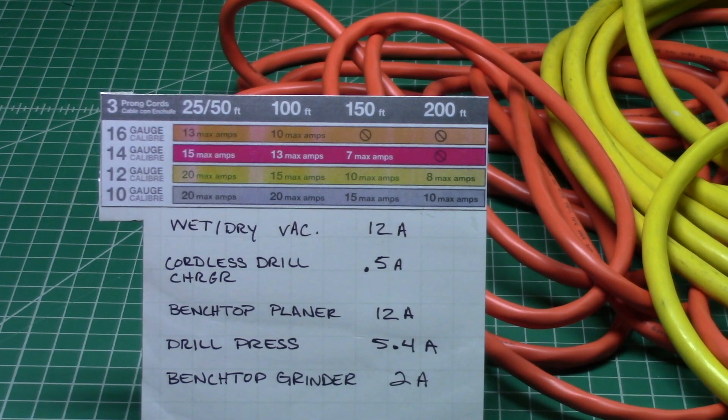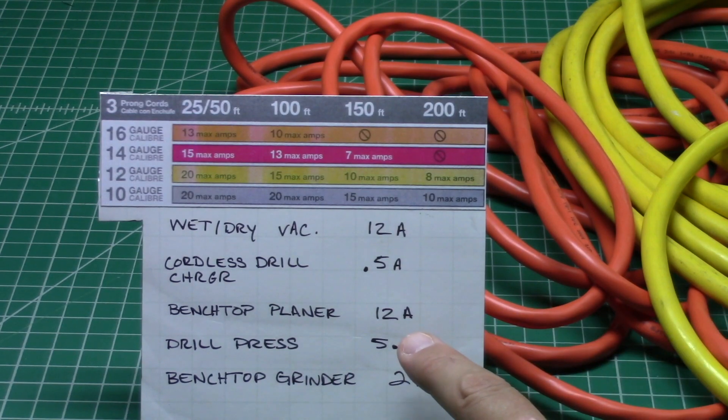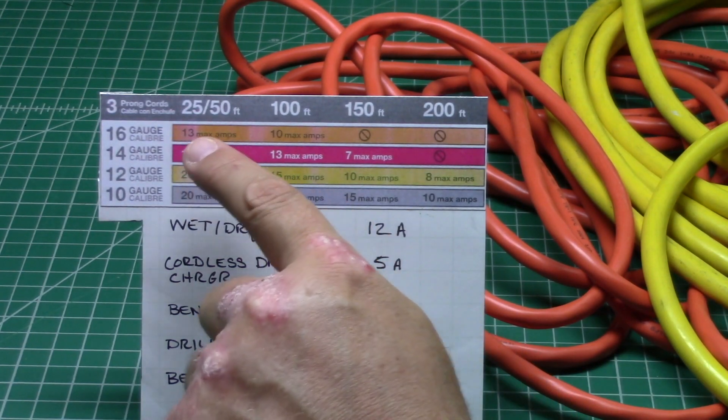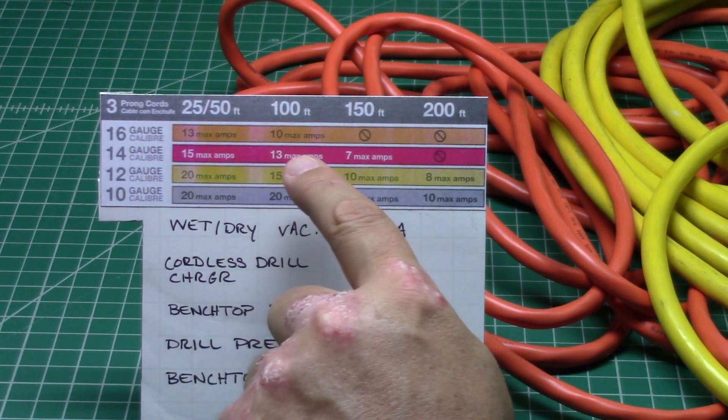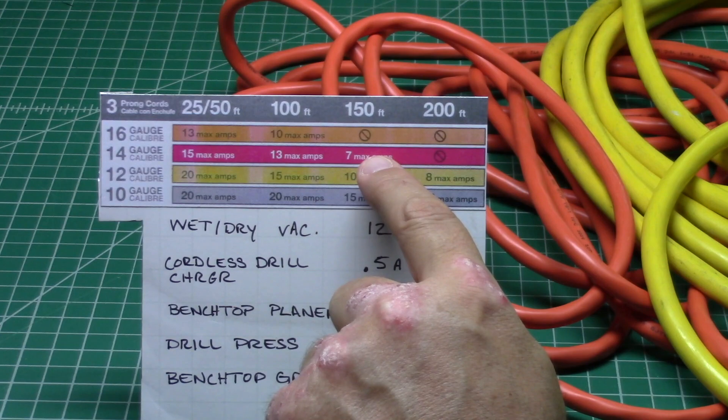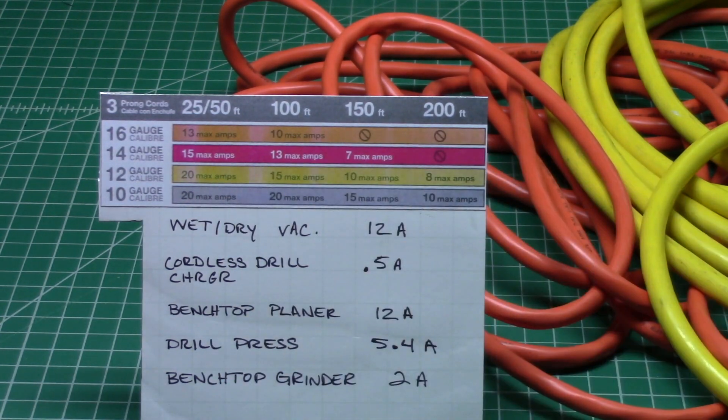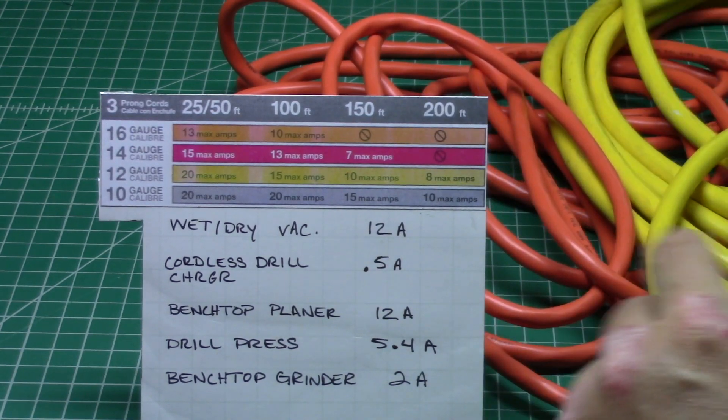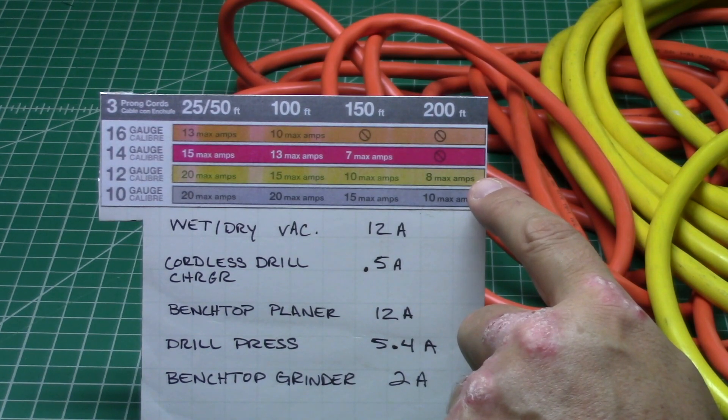Now like your cordless drill charger, that's half an amp - you can run whatever cord you want, that isn't doing a darn thing. My drill press, 5.4 amps - well I can run a 16 gauge cord up to 100 feet. I can run a 14 gauge cord up to 150 feet and run that drill press safely off of it. I can run a 12 gauge, which is this yellow one, up to 200 feet and still run it safely.